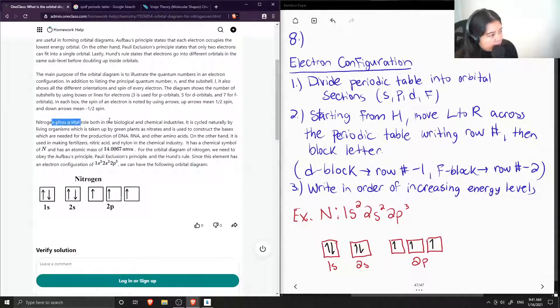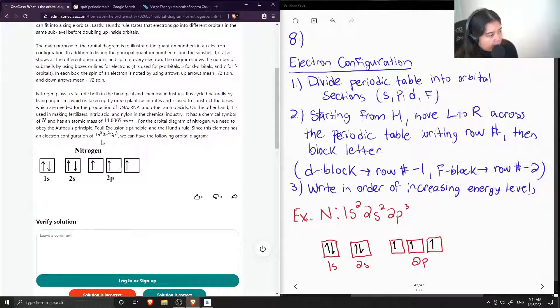Okay, so now we have a brief intro to nitrogen. And for the orbital diagram of nitrogen, we need to obey the Aufbau principle, the Pauli Exclusion principle, and Hund's rule. Since this element has an electron configuration of 1s2, 2s2, 2p3, we can have the following orbital diagram.